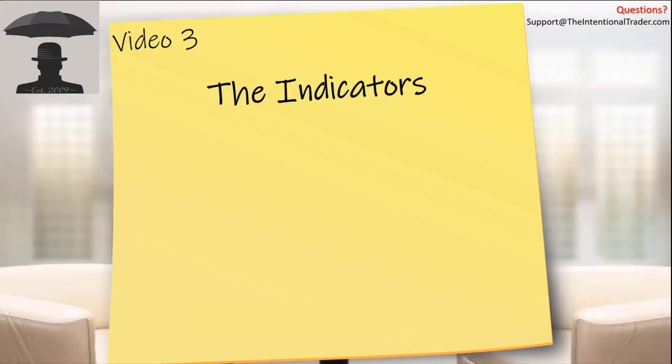Now that you know a little bit about the setups, you'll remember that we're reading strengths in order to determine imminent exhaustion, and we use indicators to do that. Some characteristics of our indicators are very different than indicators you've probably used in the past. We have what's called heads-up display indicators, and we only display what you need to see to make a decision — we don't give you a lot of superfluous information.